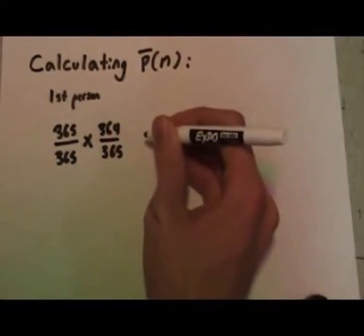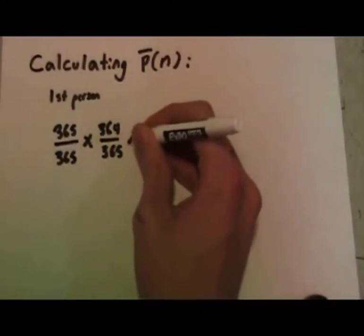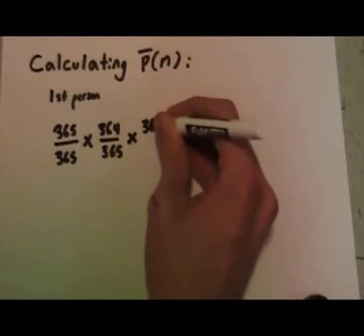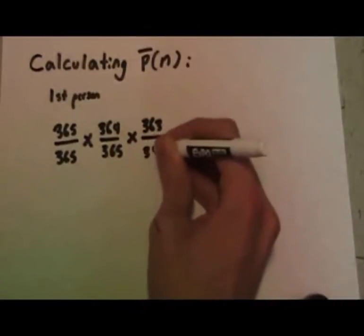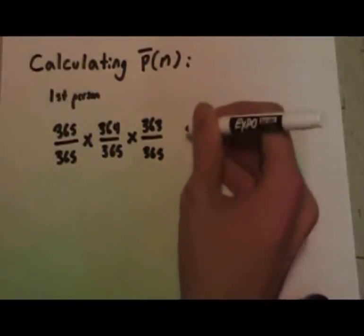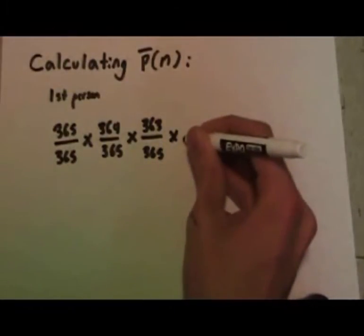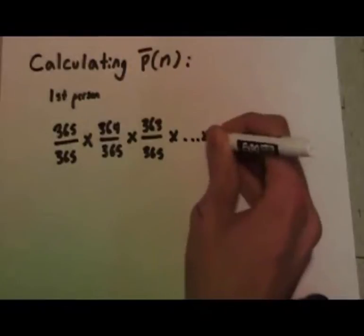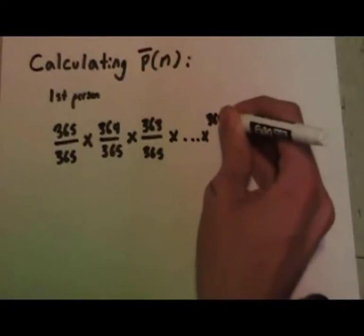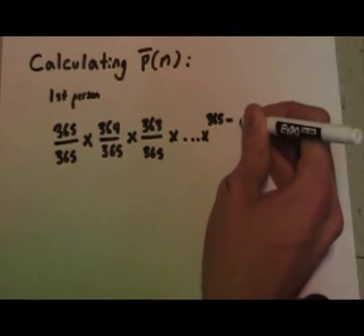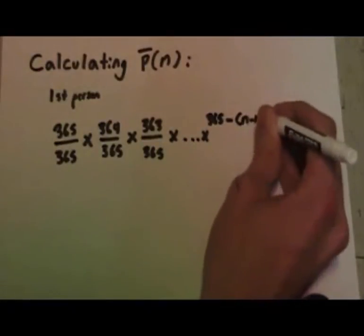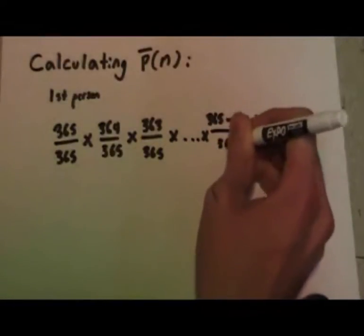Similarly, for the third person, the probability decreases to 363 over 365. And for the last person in the room, the probability decreases to 365 minus the number of people before the last person, n minus 1 people, over 365.